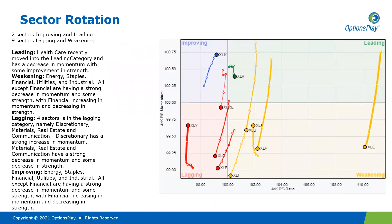Taking a look at the sector rotational chart — there is a stark difference compared to last week. We can see only two sectors in the improving and leading category, and nine sectors now in the lagging and weakening category. Very narrow leadership. The major indices have managed to stay up, and that partly comes down to the heavy-weighted tech sector. Technology was in the weakening and lagging categories for multiple weeks, and now it is showing momentum, starting to rotate almost into the leading category. The current rebound in the major indices may not be very healthy, as it's largely being supported by this one heavily-weighted tech sector.